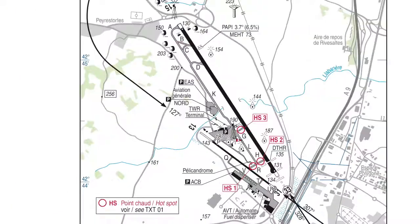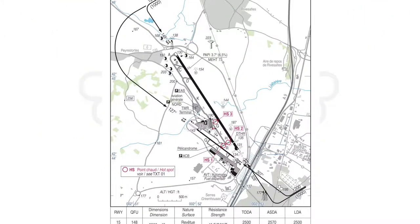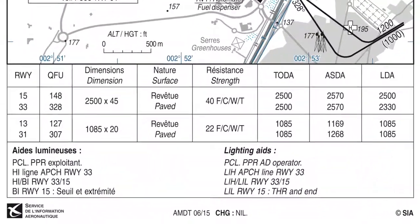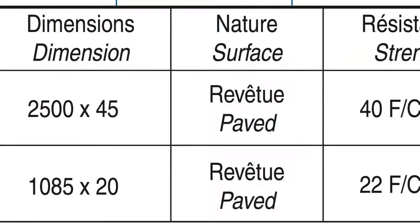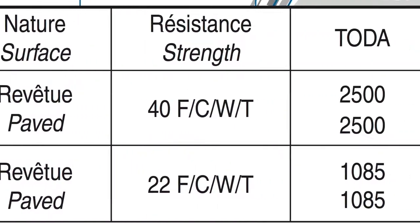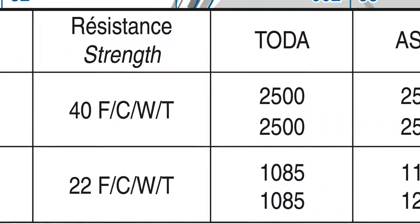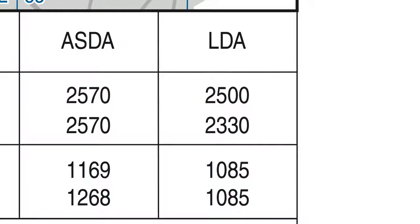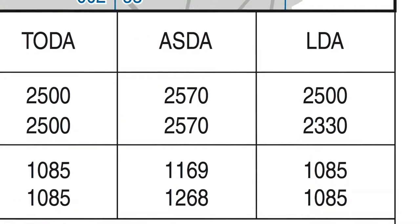There might be some text in the chart — it's important to look at it, especially if it's in red. In this case, we have a hotspot and it tells us to look at text 01, which we'll cover later. Here we've got the standard runway information table: the runway number, the QFU, the dimensions, the surface type, the strength — that's quite important especially if you're flying bigger aircraft — and then the TORA, ASDA, and LDA. Remember, you can calculate some of these, and it's really important to use them for your performance calculations.